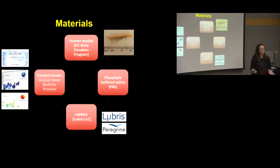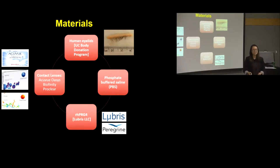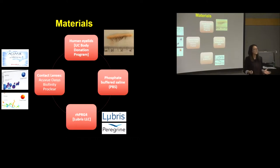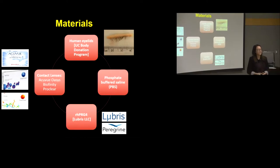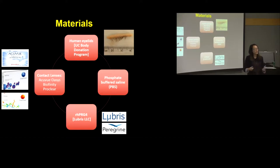The materials I used for testing include cadaver human eyelids donated from the U of C body donation program — which means going to the anatomy lab at Foothills and cutting eyelids from cadavers. We also used phosphate buffered saline, which I'll refer to as saline throughout. We received batches of RH-PRG4 from the company Lubris, and Peregrin is the company that manufactures these batches. The contact lenses tested were AccuView Oasis, BioAffinity, and ProClear.